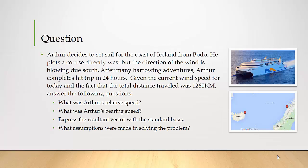In the following question, Arthur decides to set sail for the coast of Iceland from Buda. He plots a course directly west, but the direction of the wind is blowing due south. After many harrowing adventures, Arthur completes his trip in 24 hours. Given the current wind speed for today and the fact that the total distance traveled was 1,260 kilometers, answer the following questions.